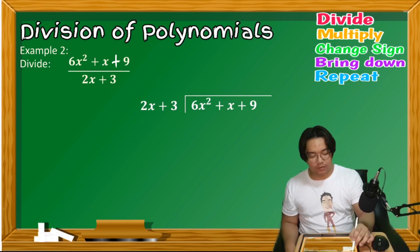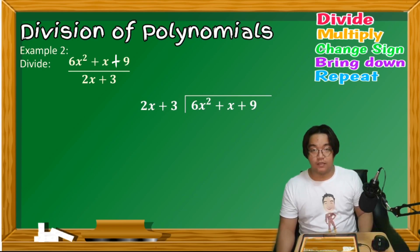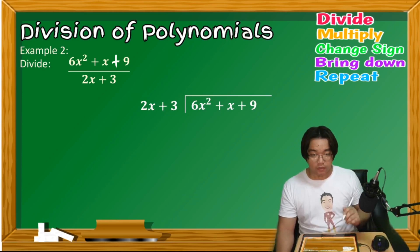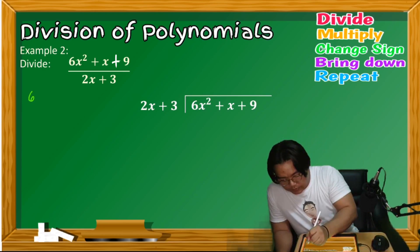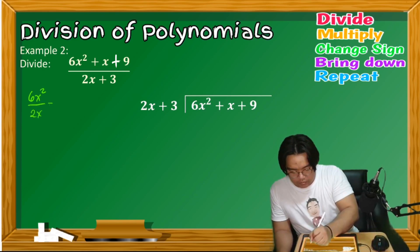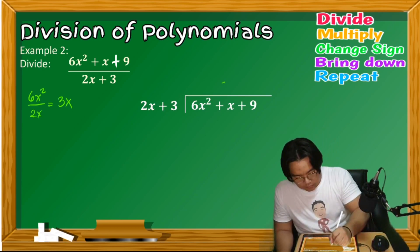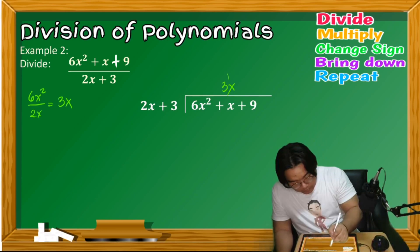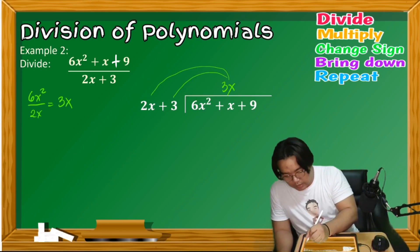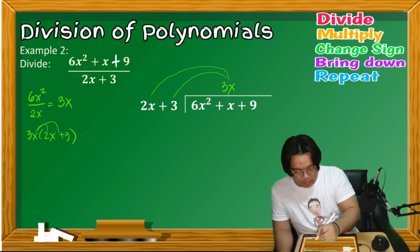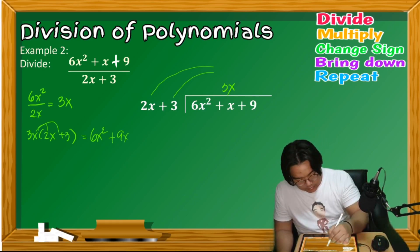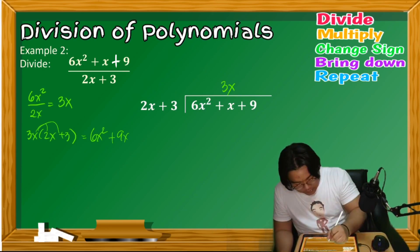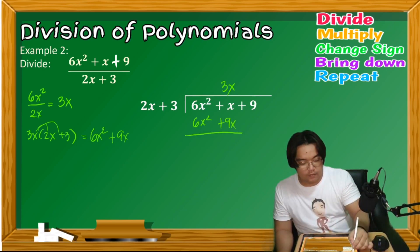Example 2: Divide 6x² + x − 9 by 2x + 3. Arrange the long division and apply the five steps. Step 1: divide 6x² by 2x to get 3x, aligned on top of x. Step 2: multiply 3x by 2x + 3 using the distributive property to get 6x² + 9x. Line up like terms.